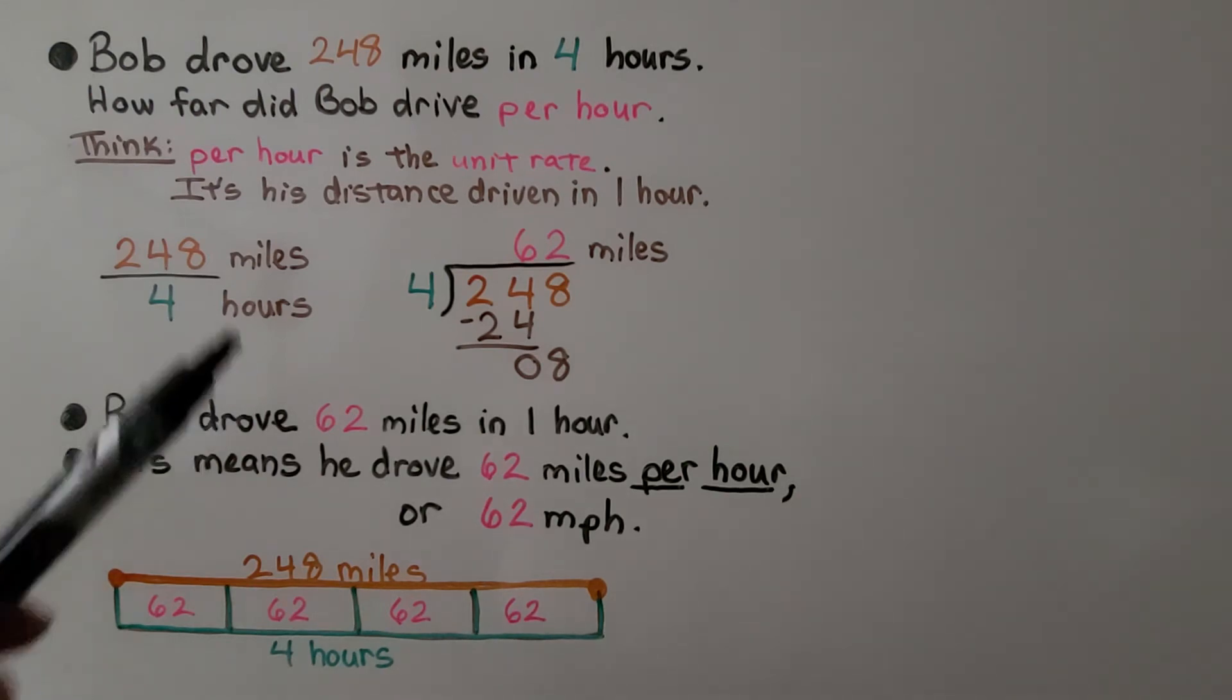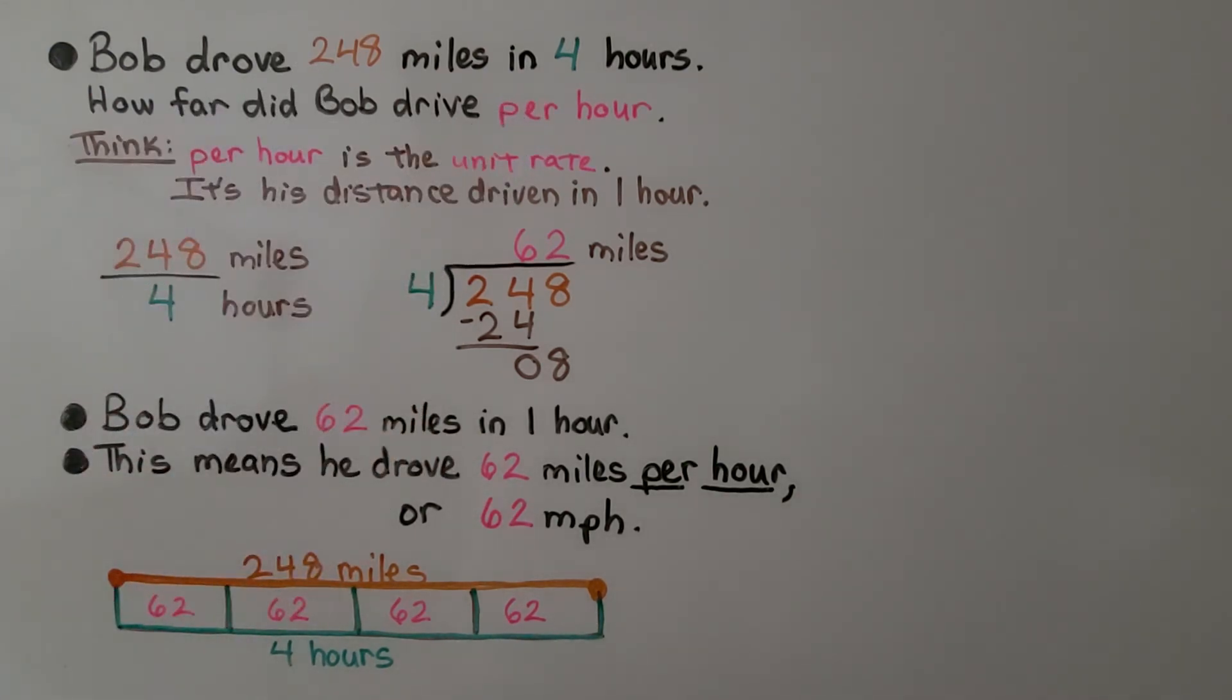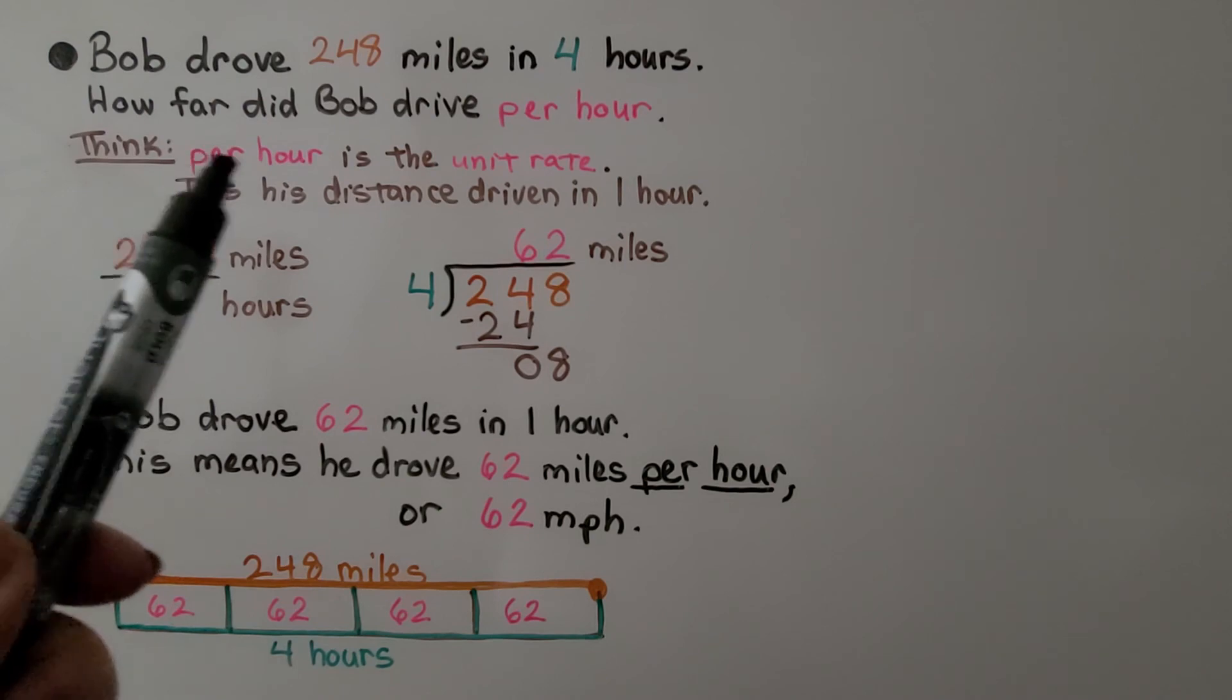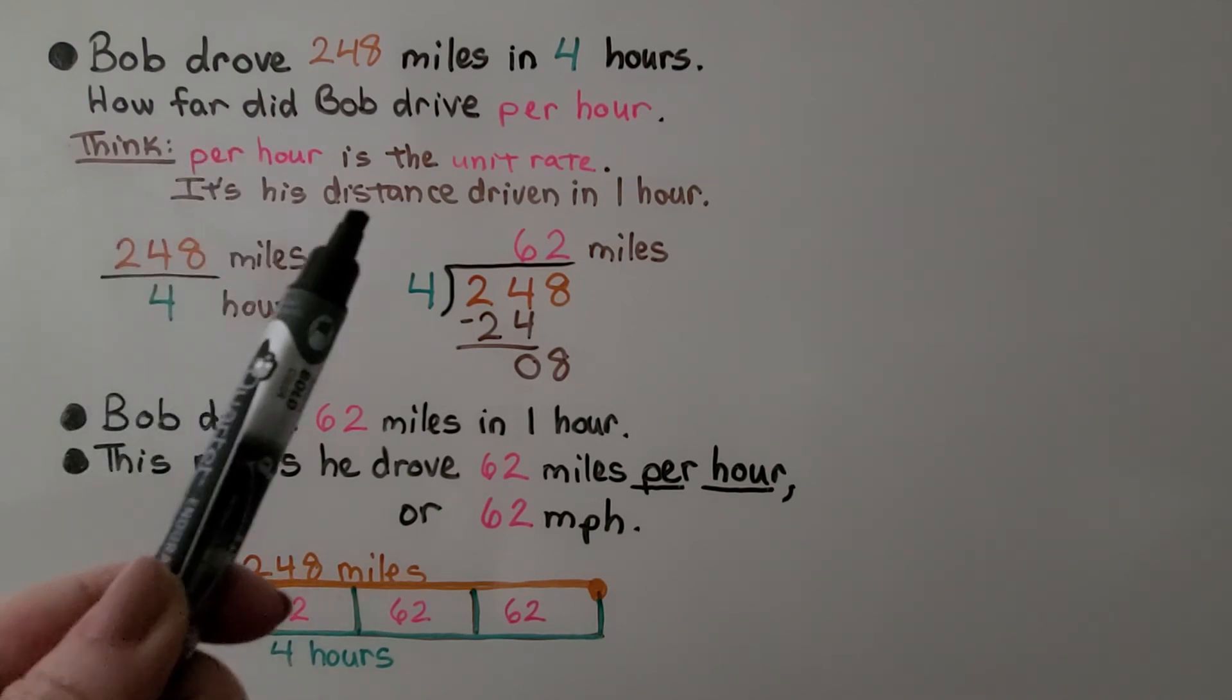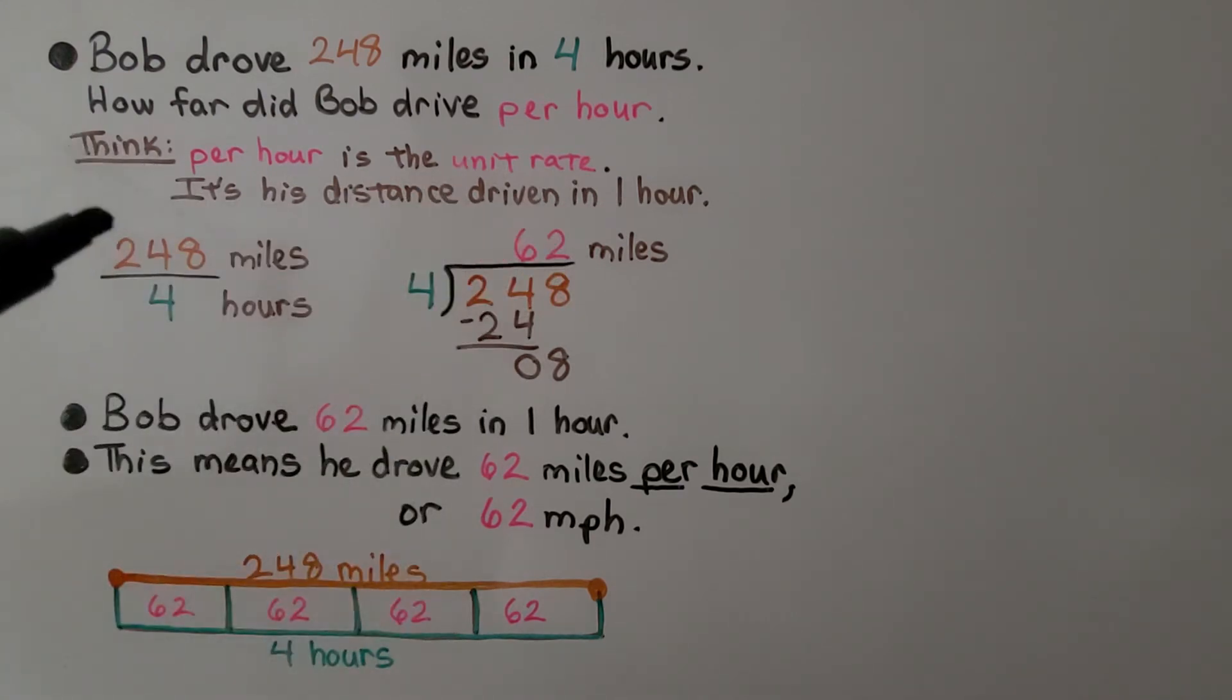Bob drove 248 miles in 4 hours. How far did Bob drive per hour? We think per hour is the unit rate. That means each hour. It's his distance driven in 1 hour.